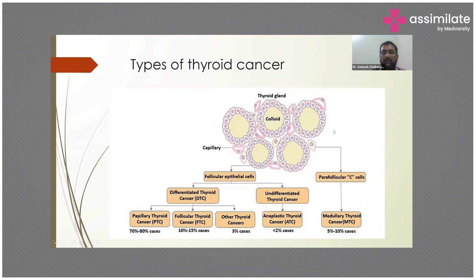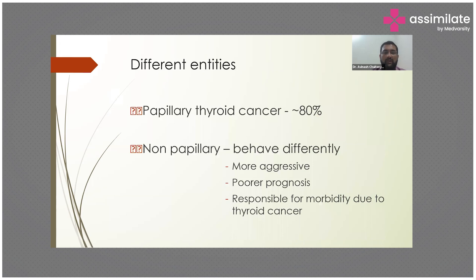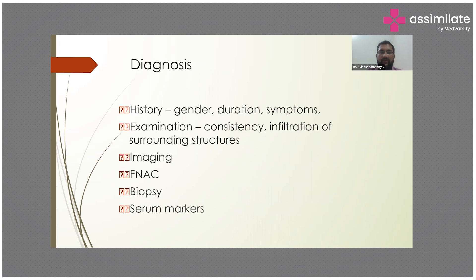Today we will be dealing with everything except papillary carcinoma of the thyroid. Papillary thyroid carcinoma is around 80% of all thyroid cancers. Thankfully, the non-papillary types are only 20% — and I say thankfully because they behave very differently, their management is different, they are more aggressive, they have very poor prognosis, and most of the morbidity associated with thyroid cancer is generally due to the non-papillary variants.